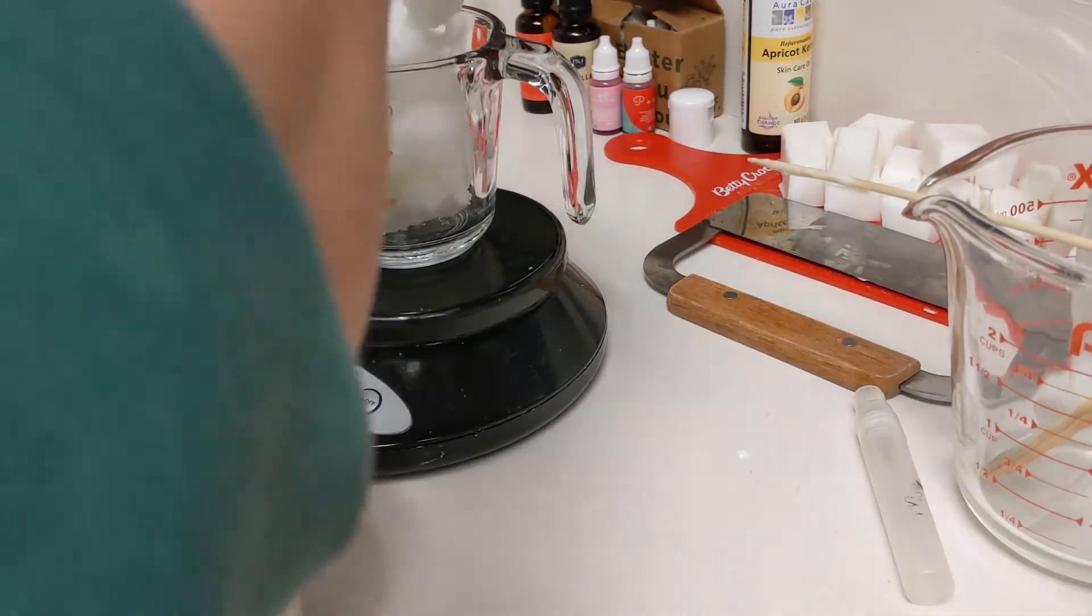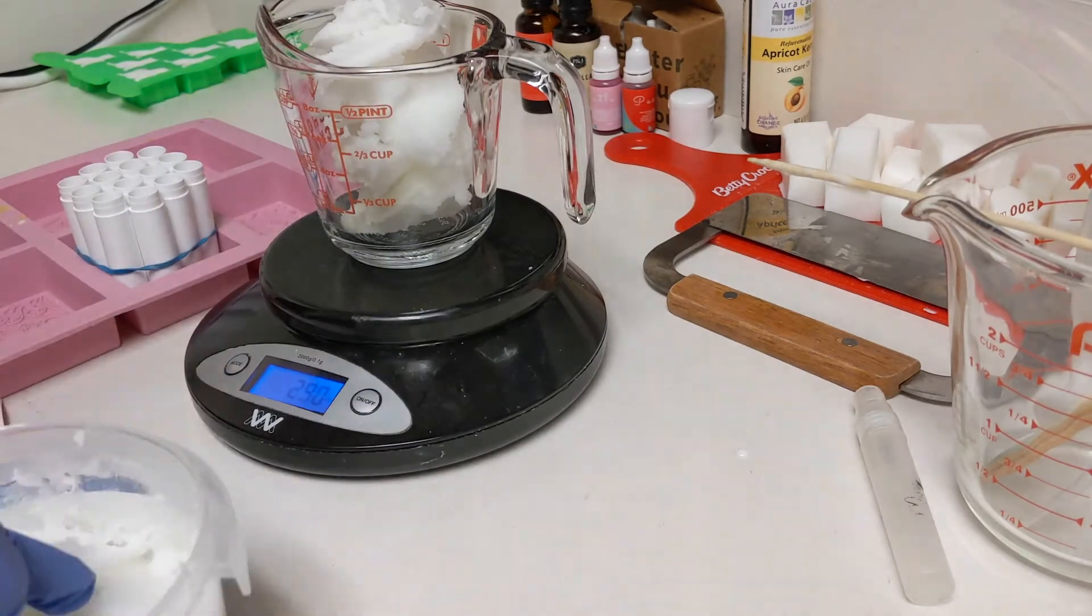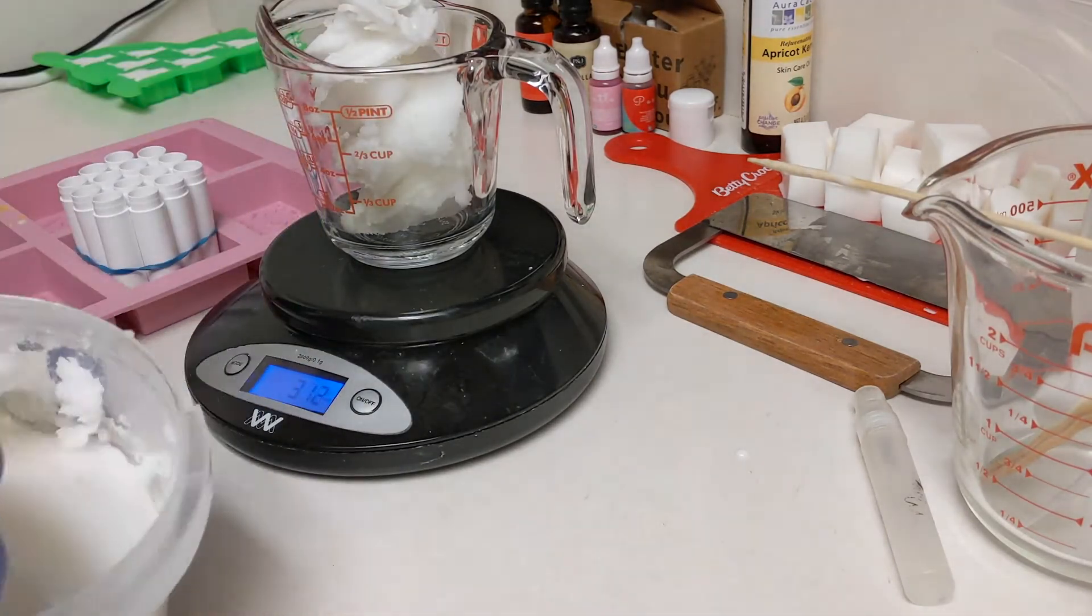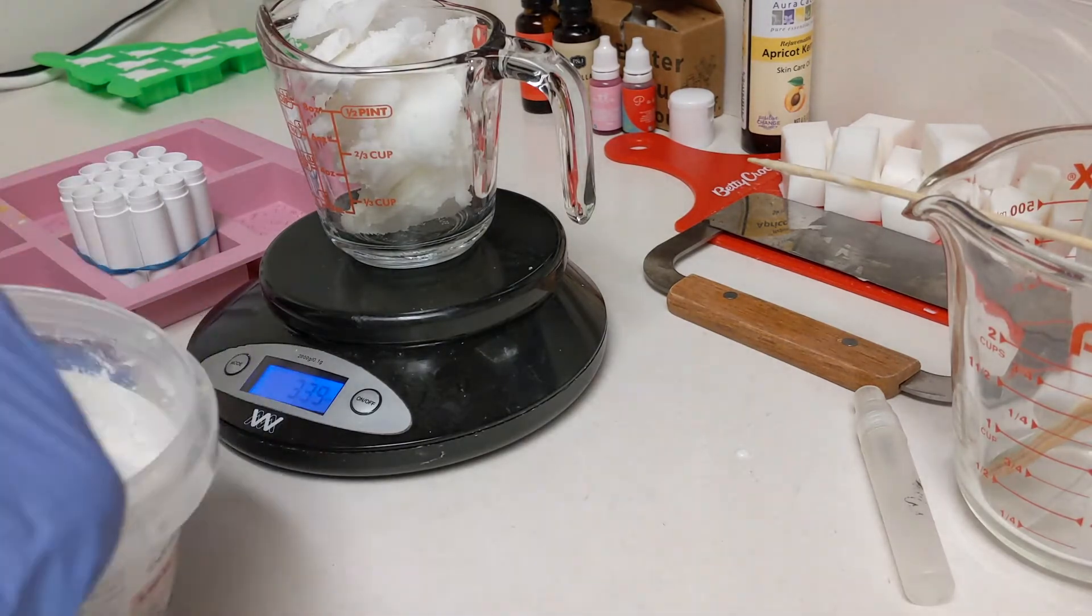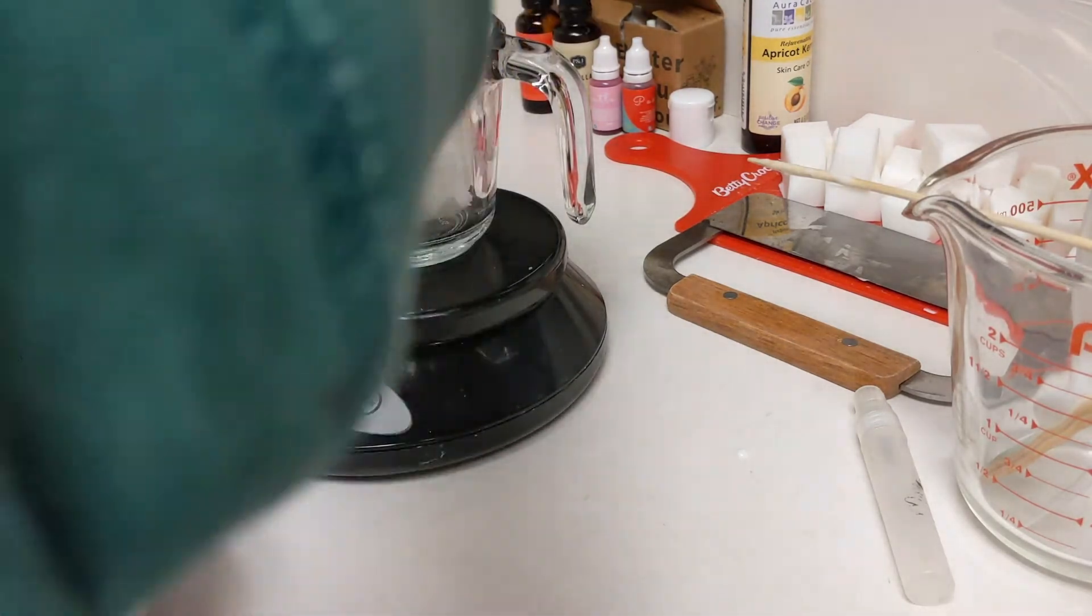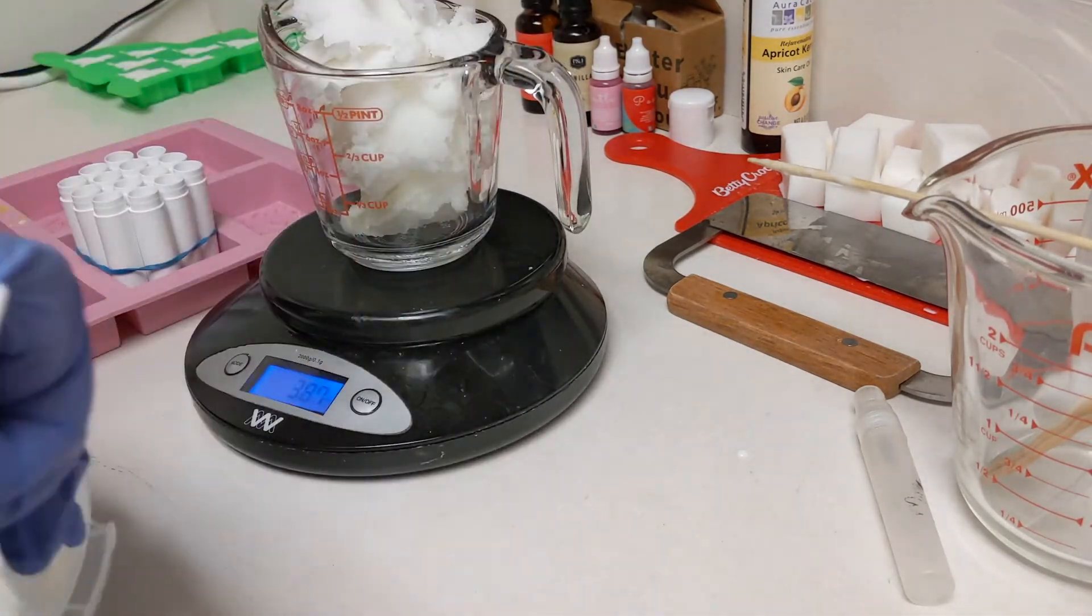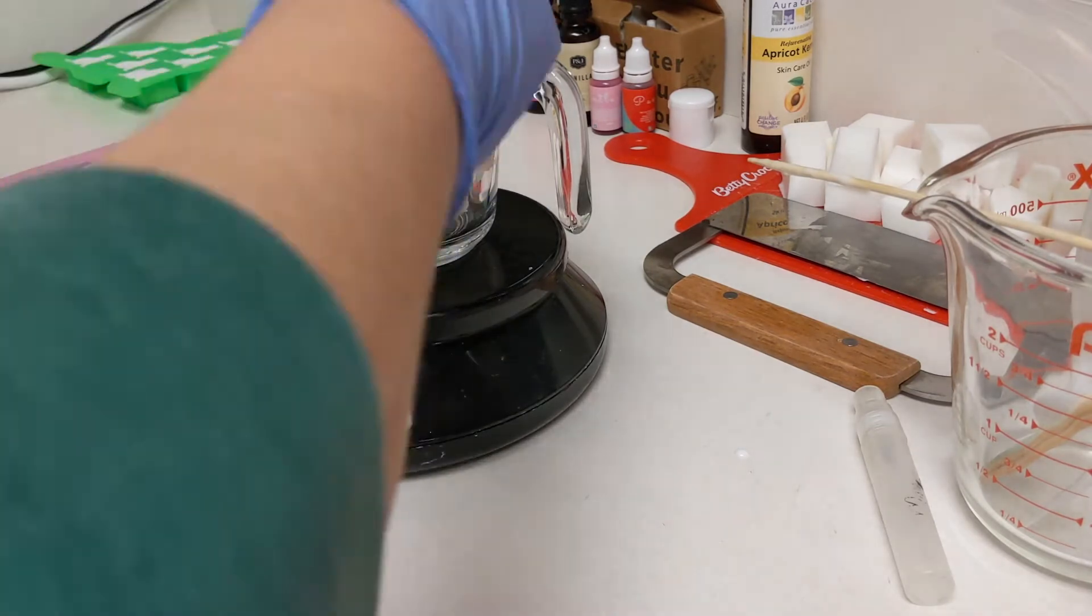I ended up using about half of this container that I bought at Michael's. You can find it in the aisle where you can buy all the other soaping stuff. I just scooped it out with a little disposable plastic knife.